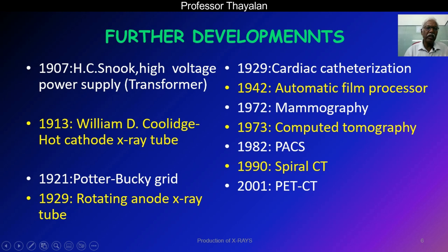One important discovery is the high voltage power supply transformer, discovered by H.G. Snoke in 1907. Another very important discovery is the Coolidge hot cathode X-ray tube, which provided the production of electrons by thermionic emission. Before that, X-rays were produced by ionization of gas. The Coolidge tube was the first to demonstrate that by heating a metal, electrons can be liberated — thermionic emission — which became the principle of X-ray production used in all modern X-ray tubes.